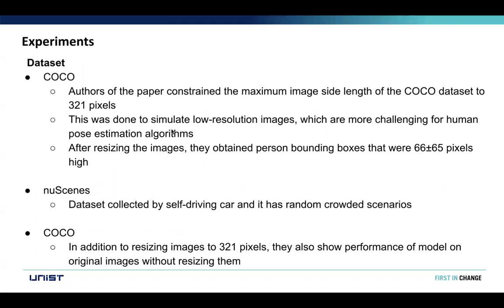They experiment on datasets such as COCO. Since the aim of this method is to get an algorithm that works well for wide-angle and low-resolution images, they constrain the maximum image size of the COCO dataset to 321 pixels. This was done to simulate low-resolution images, which are more challenging for human pose estimation algorithms.